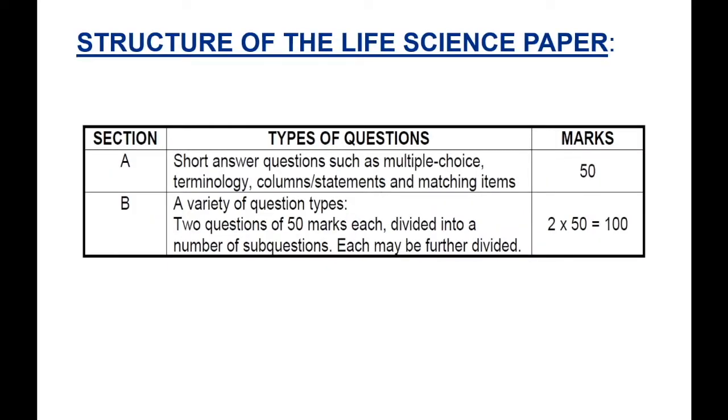Let us look at the structure of the Life Science Paper. You will have Section A. Section A will have multiple choice questions, terminology, your matching items with different columns and statements. That will be 50 marks. And that is the 50 marks that you must try to really attain so that you can do well in your exams. Section B will have two questions of 50 marks each. So it will be a question 2 and 3, 50 marks each. And this is where you can find your level four questions.